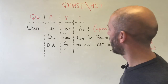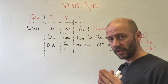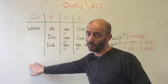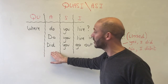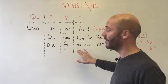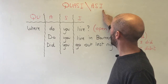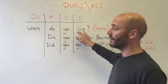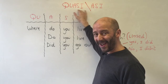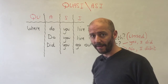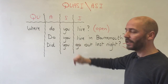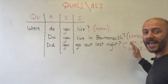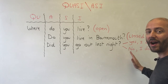Closed questions begin with the auxiliary verb — no question word. The ASI pattern is: Auxiliary, Subject, Infinitive. For example: did you go out last night? Yes, I did. No, I didn't.